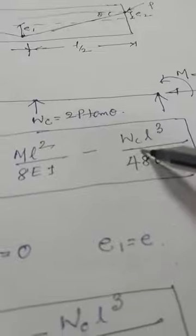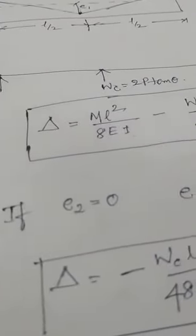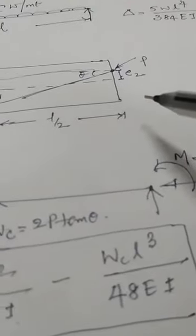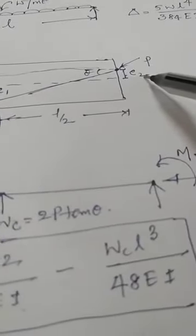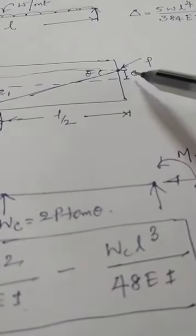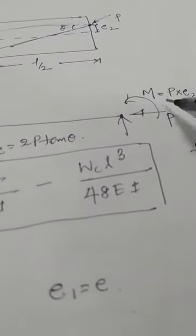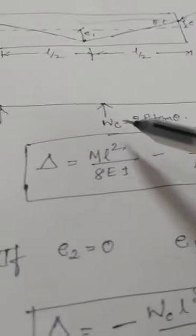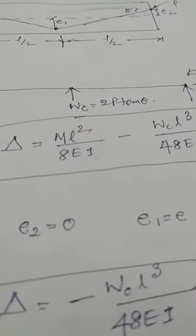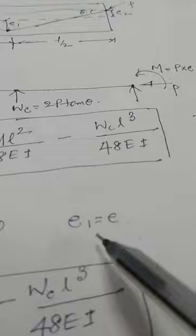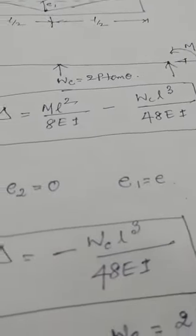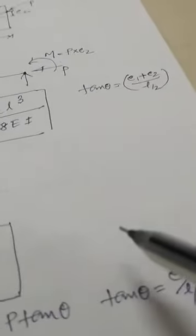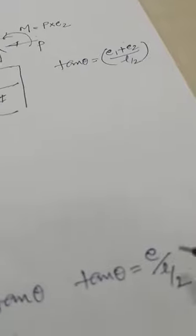The total deflection due to the prestressing force is ML²/8EI minus Wc·L³/(48EI). If e2 is zero — that means eccentricity at the end is zero — the moment will vanish. Then only Wc exists with one eccentricity, e1, which can be taken as e.